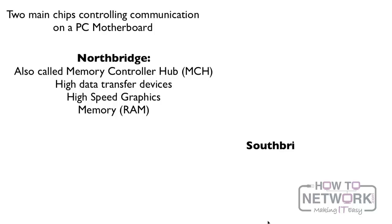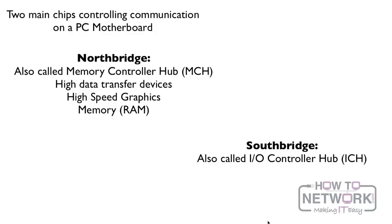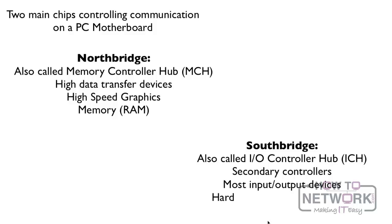This is different from the South Bridge — lower than the North Bridge — which is also called the IO Controller Hub, or ICH. This is for secondary controllers — just about anything else. Any input/output devices such as hard drives, USB, and Ethernet — just about everything else is controlled by the South Bridge.